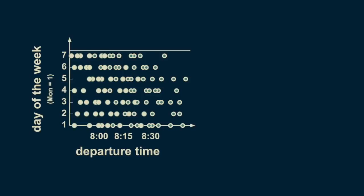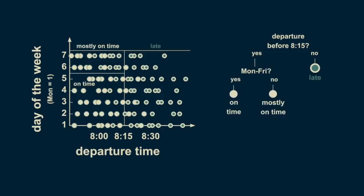This means that leaving at 8:10 is probably sufficient to get you to work on time on a weekday, but probably not on the weekend. To represent this in a decision tree, we can start by putting a decision boundary at 8:15. Any departure times after 8:15 are likely to be late. Departure times before 8:15 are inconsistent. To make our estimate better for the weekends, we can subdivide the before 8:15 departure times into weekday and weekend. A weekday departure before 8:15 is confidently on time. However, weekend departures before 8:15 are mostly on time, but not entirely. We have updated the decision tree with a node that reflects this new decision boundary.